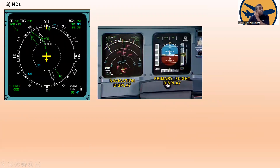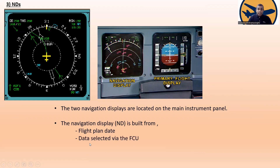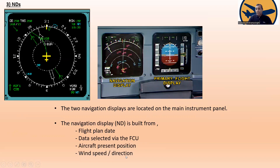Now let's go to the navigation displays. Here you can see the navigation display and the primary flight display. The two navigation displays are located on the main instruments panel — one for the first officer and one for the captain. The navigation display is built from flight plan data and data selected via the flight control unit, aircraft present position, and wind speed and direction.